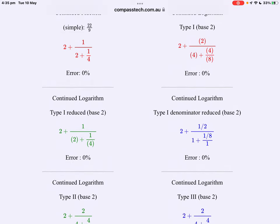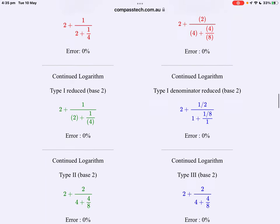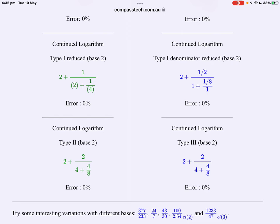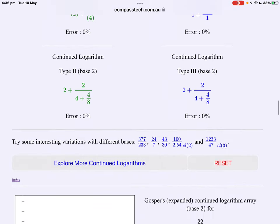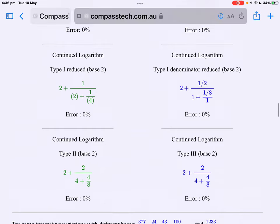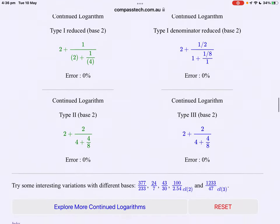Have a look at type one. Straight away we see something different. This is no longer a simple continued fraction because the numerators are no longer one. Where do those numbers come from though? The middle two, type one reduced, is an attempt to reduce the numerators to one, similar to a normal continued fraction. And the denominator reduced version reduces the denominators after the leading term to one. Then type two and three, well in this particular case, they come out looking very much like the original type one. But that's not always the case.